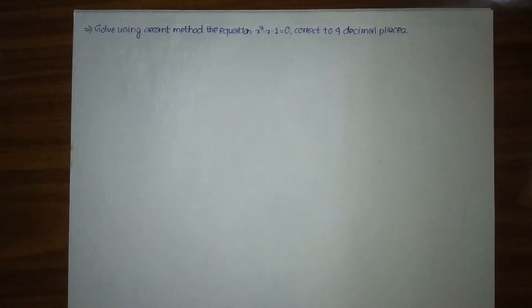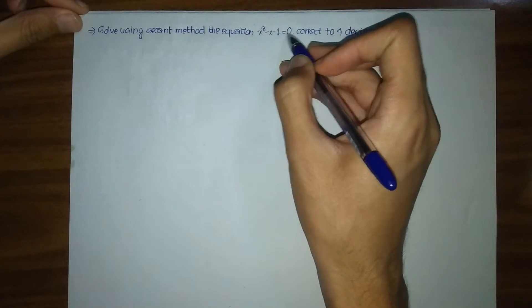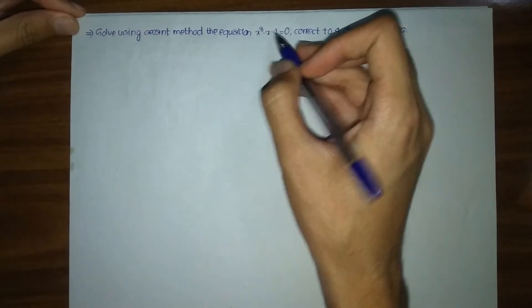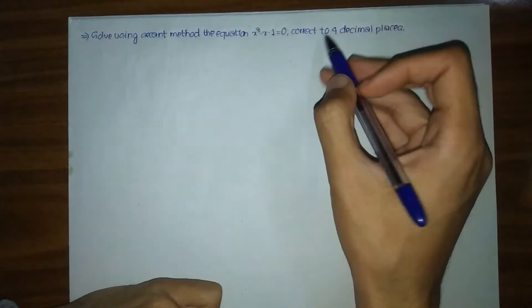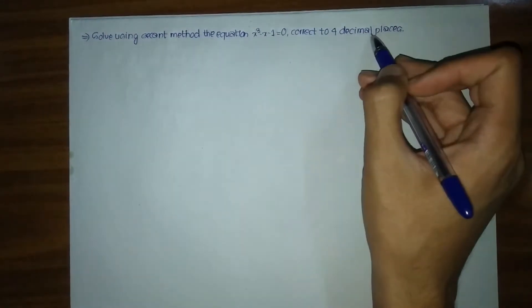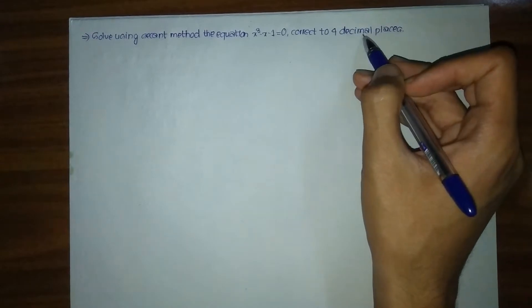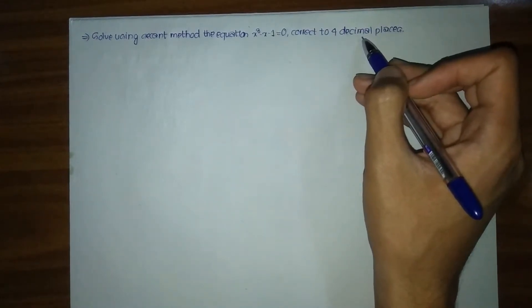Hello online viewers, welcome to our lecture video. In this lecture video we will be solving the equation x cubed minus x minus 1 equals to 0 using the second method, and we will be finding the root of this equation correct to 4 decimal places. In order to find the root we will be solving it by setting a function in the calculator.